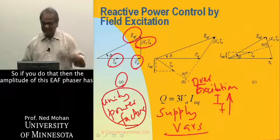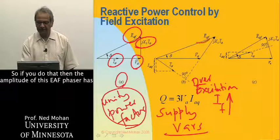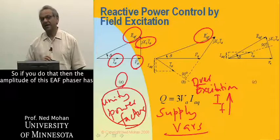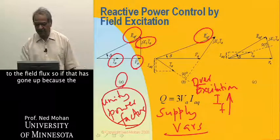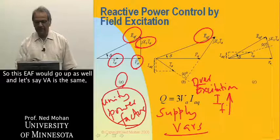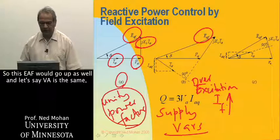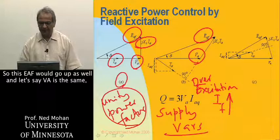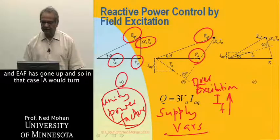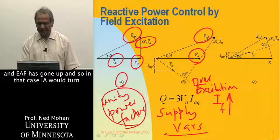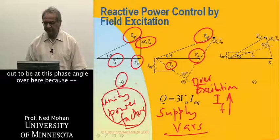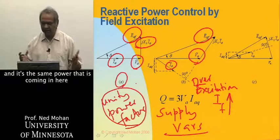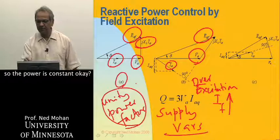If you do that, the amplitude of this EAF phasor has to increase — we saw that it was proportional to the field flux. So if IF has gone up, EAF goes up as well. With VA remaining the same and EAF increasing, IA turns out to be at a different phase angle, while the same power is coming in — power is constant.